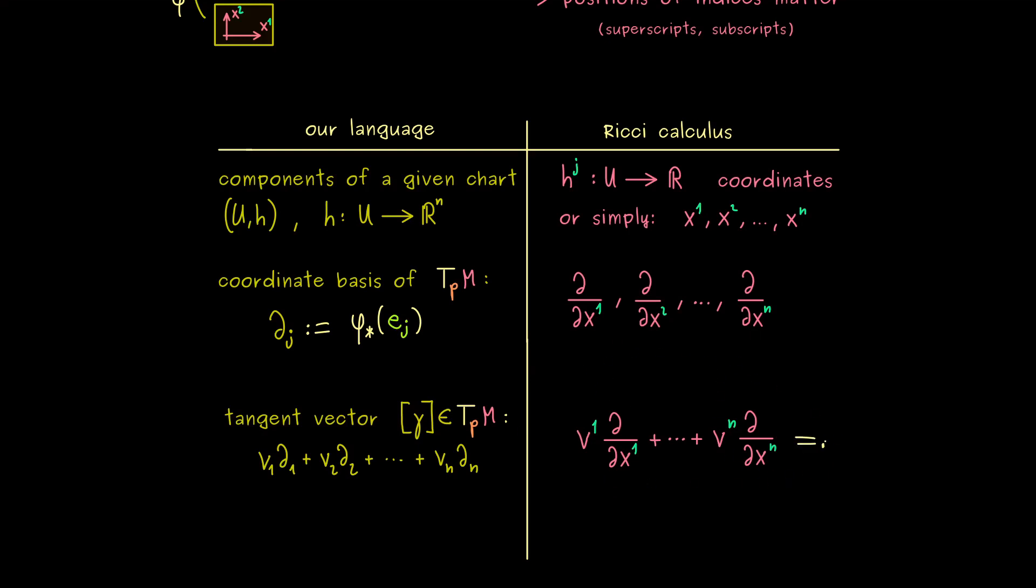However, since such constructions occur a lot if you work with coordinates, one wants to shorten that even more. And one does that by introducing a new convention. Namely, it tells you if you see two indices of the same name, one upstairs and one downstairs, you have to sum over it. In other words, here implicitly there is a sum sign over j here. But because we agree to this convention, we will never write the sum sign in the Ricci calculus. It's always completely omitted.